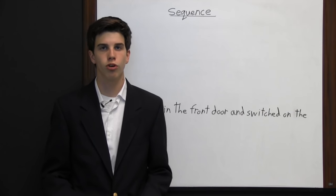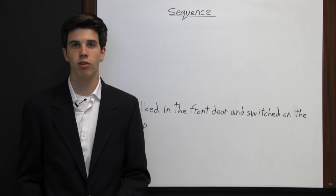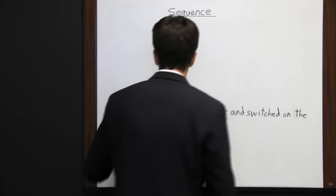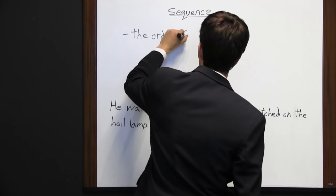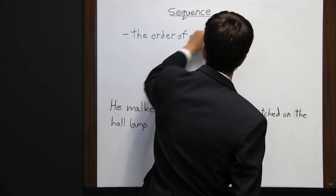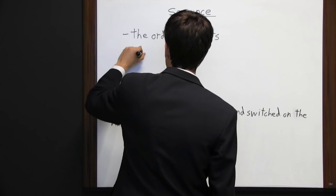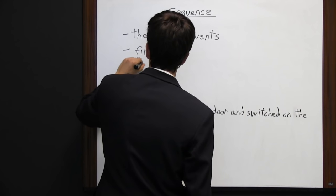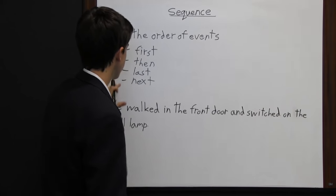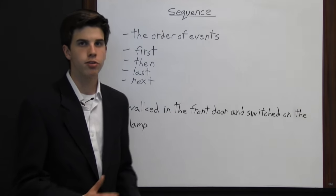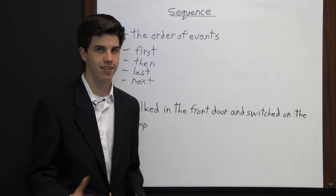A sequence is the order in which things happen. It's important that a reader be able to identify the sequence so they can follow along with what is happening in the passage. To help spot the sequence, you can look for words like "first," "then," "last," and "next." If you find these words, you'll know that's showing you some part of the sequence, and that helps you determine what happened first, then next, and then last.